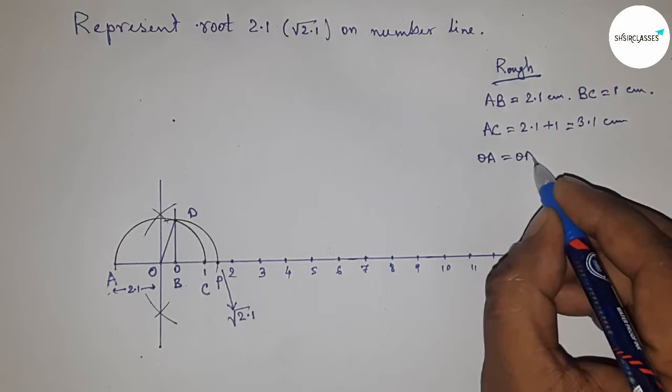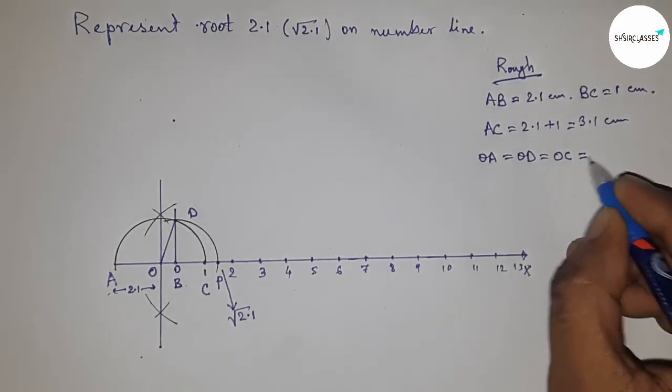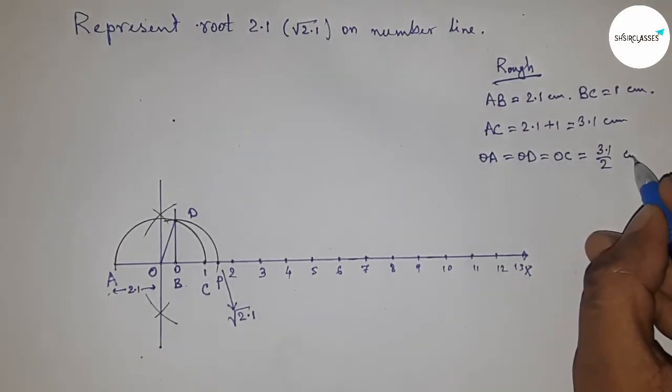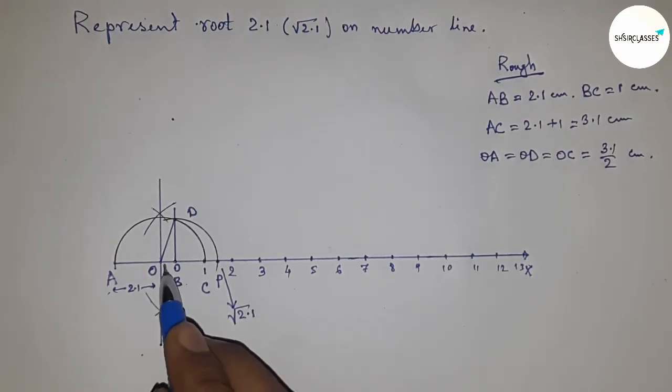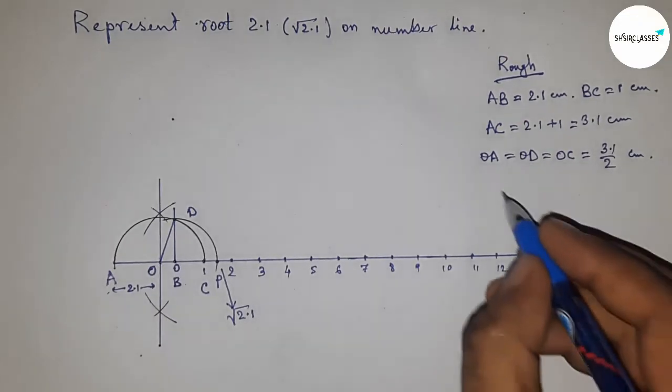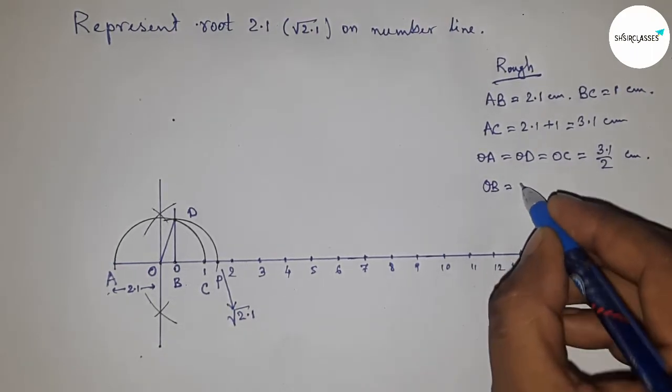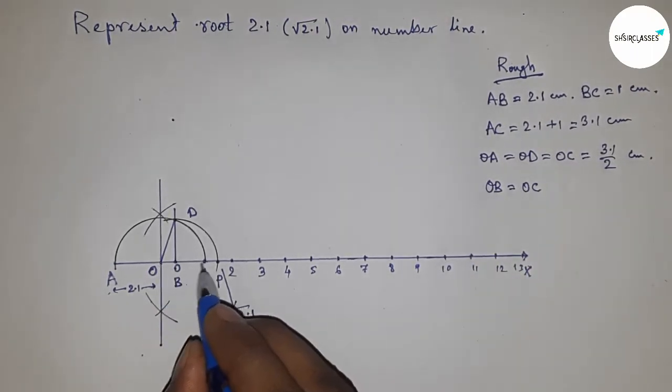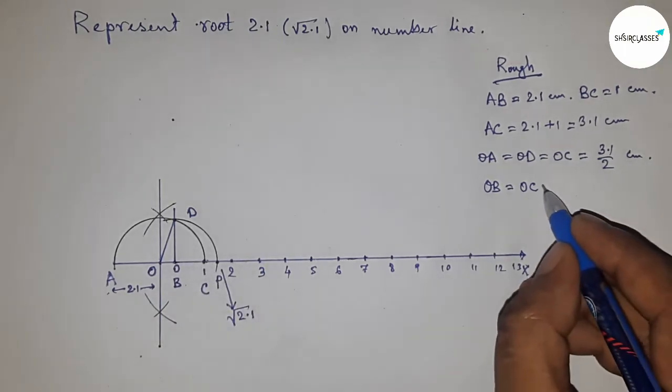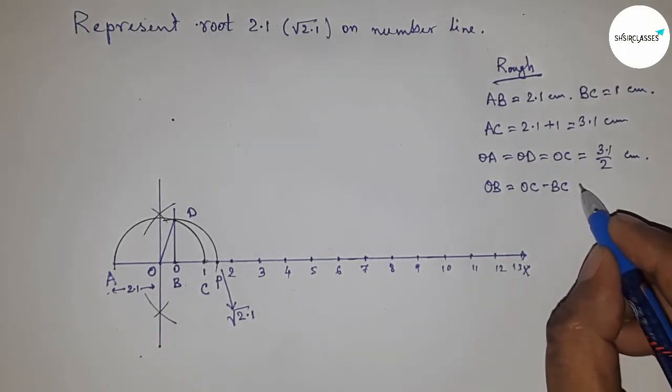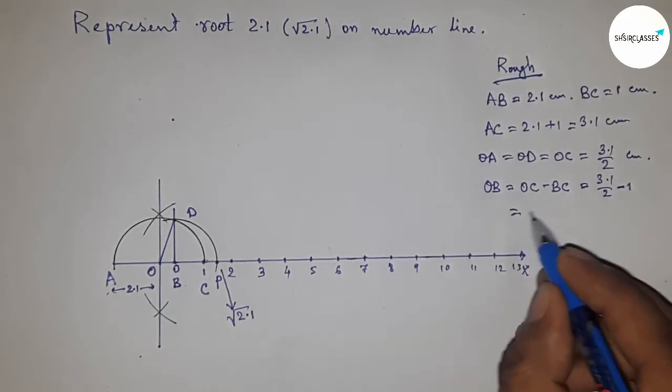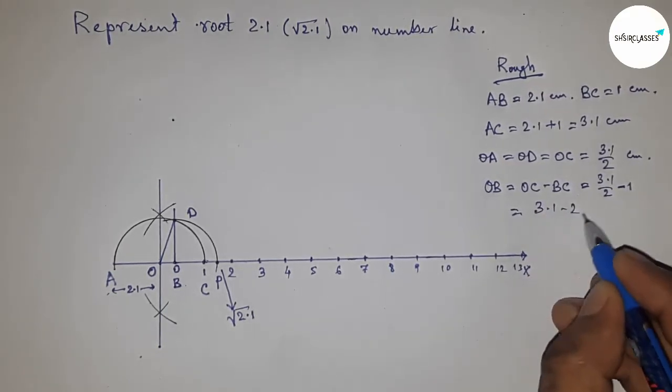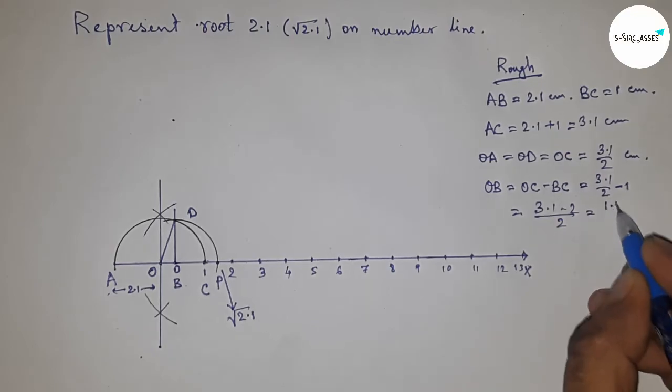The radius OA, OD, or OC equals AC divided by 2, so this is the radius. Now the distance OB equals OC minus BC. Putting the value of OC, we get 3.1 by 2 minus 1. After calculating, this is 1.1 by 2 centimeters.